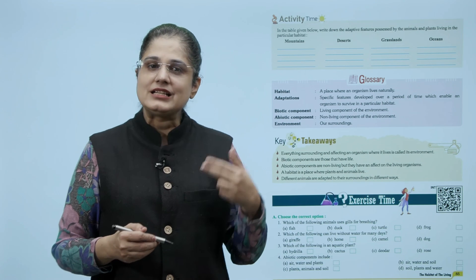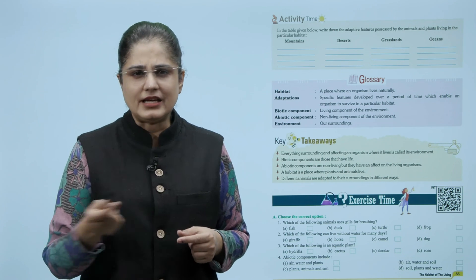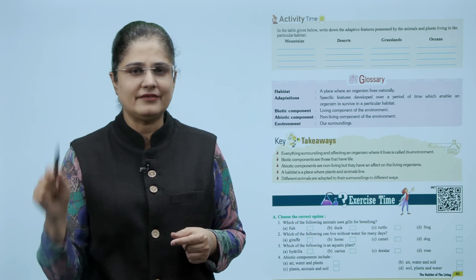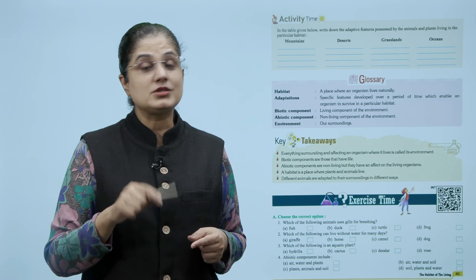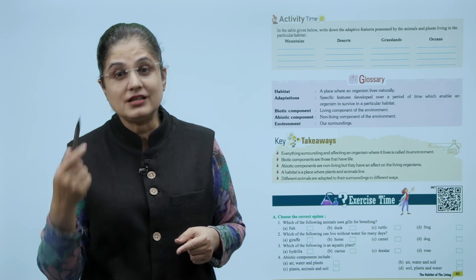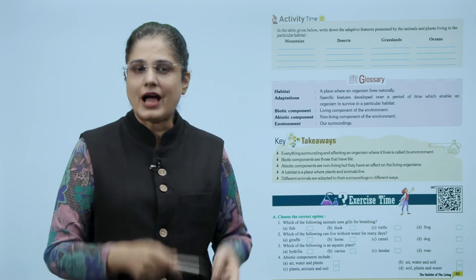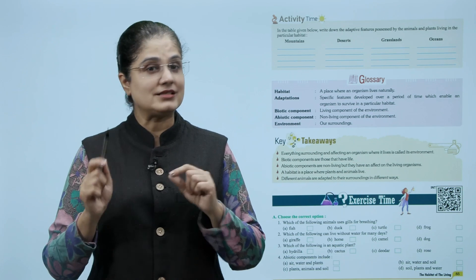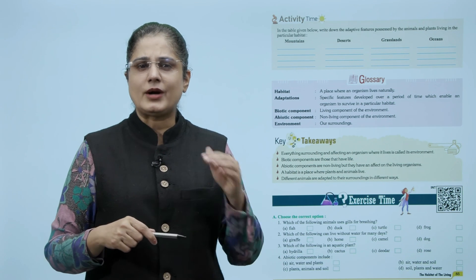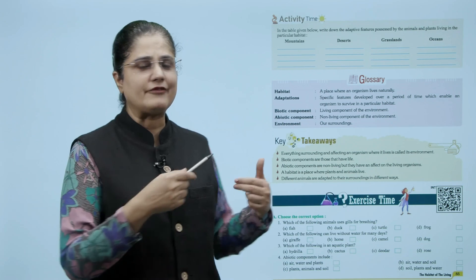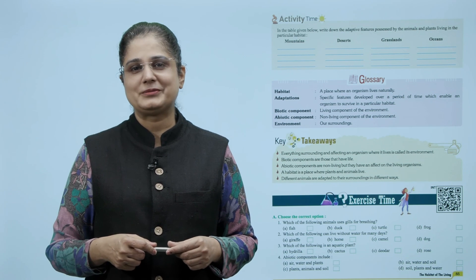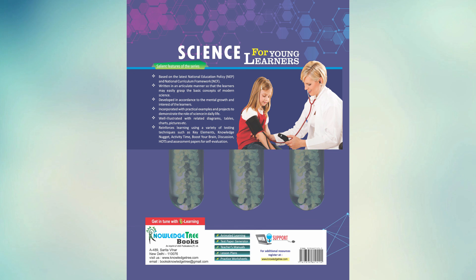The key takeaways from this chapter: everything surrounding and affecting an organism where it lives is called its environment. Biotic components are those that have life. Abiotic components are non-living but they have an effect on living organisms. A habitat is a place where animals and plants live, and different animals are adapted to their surroundings in different ways. I hope all the points covered in this chapter are clear and answering questions based on this topic will be easy. Thank you.